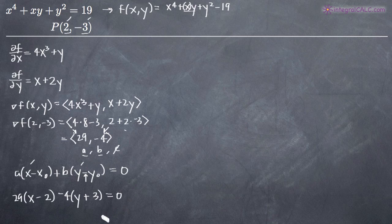We could leave this just like it is, but it's probably cleaner to simplify. So we're going to multiply these out. We'll get 29x minus 58 minus 4y minus 12 equals zero.